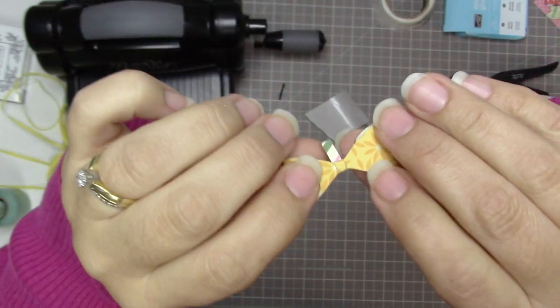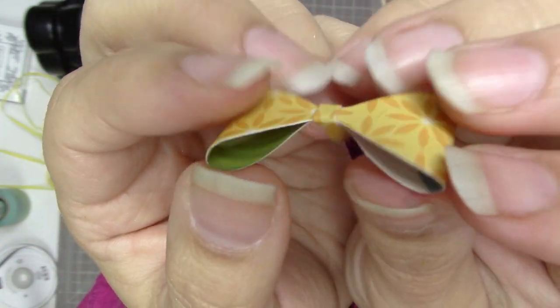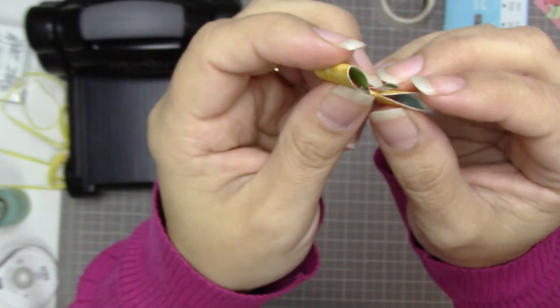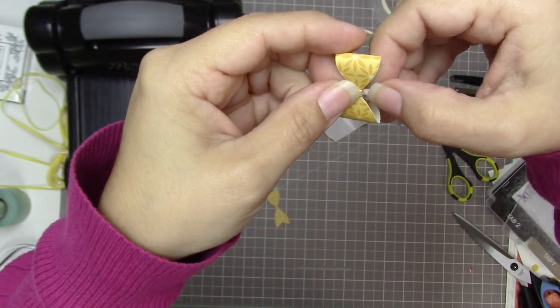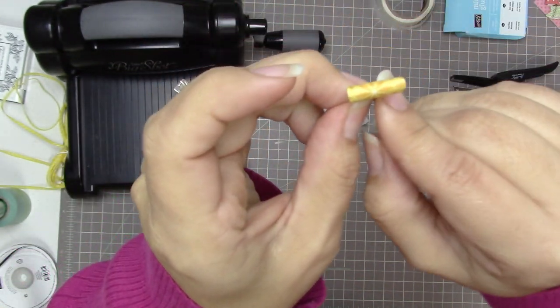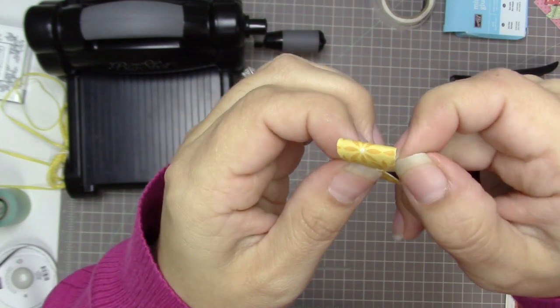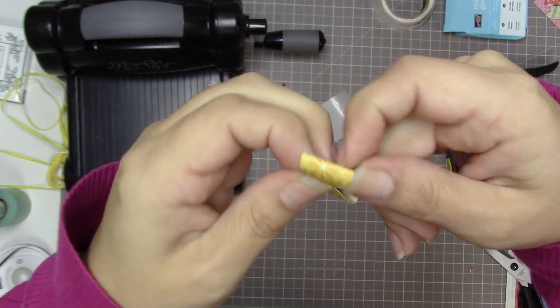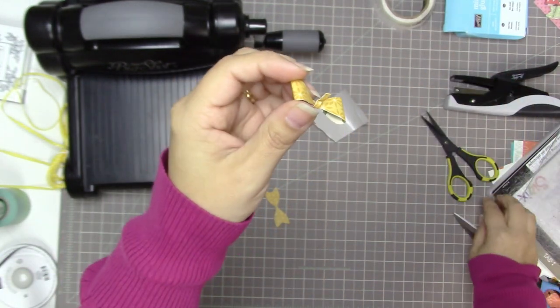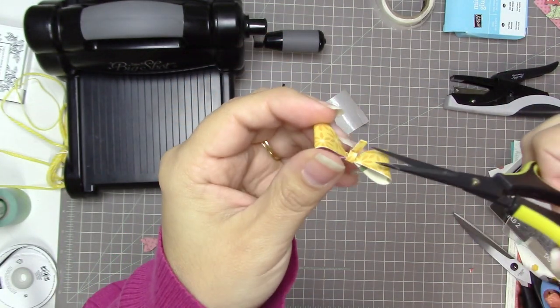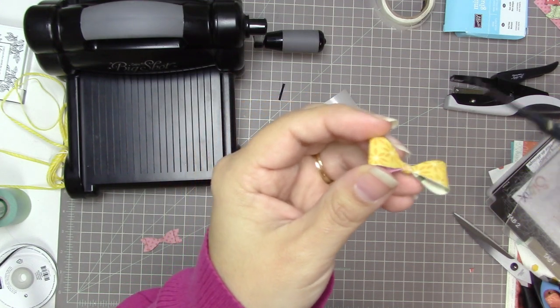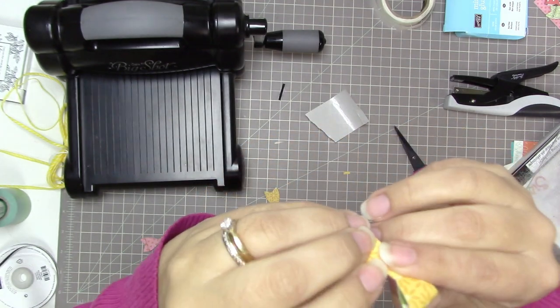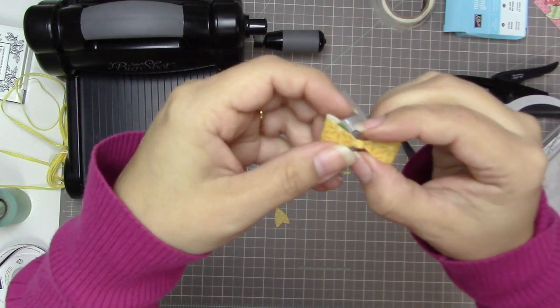So I end up with a piece that looks like this on the front and like that on the back. Now I'm going to trim this piece of paper so that you won't see it from the front. So I just make a little fold, just a little crease mark, and then I make sure that I cut below the crease mark. Before I glue it, I'm just going to make sure that you can't see it from the front. Nope, you can't.